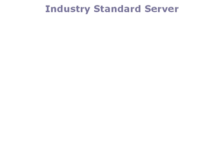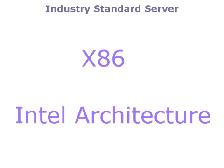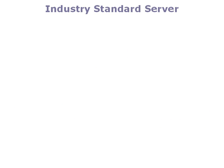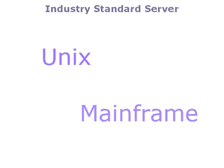The type of servers we are covering are often referred to as industry standard. They can also be referred to as x86 or Intel architecture. These terms all refer to the way in which Intel and IBM originally architected the PCs from which these servers evolved back in the early 1980s. There are other server types you may have heard of, such as Unix servers and mainframe servers. These are not covered here.